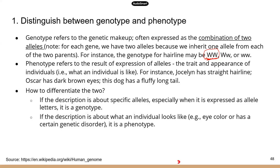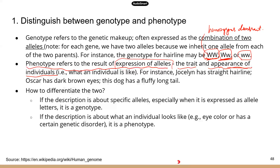Two capital letters means you are homozygous dominant. Big W, little w — that's heterozygous, meaning you have one dominant and one recessive allele. Two lowercase letters is just recessive. Phenotype refers to the trait and appearance — what an individual looks like — as a result of the expression of the two alleles. For example: Jocelyn has a straight hairline (phenotype), Oscar has dark brown eyes (phenotype), and a dog has a fluffy long tail (phenotype). It's easy to differentiate — letters indicate genotype; a statement describing what something looks like is phenotype.